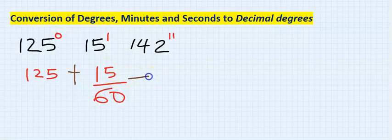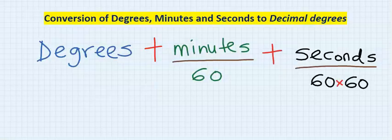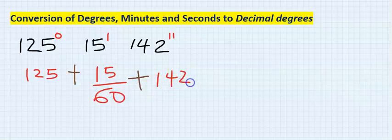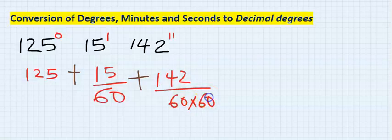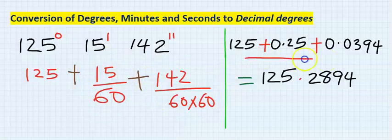Next, plus the seconds, we divide 60 multiply 60. Hence I'm going to have 142 divide 60 by 60, that's 3600. When you solve each of these, adding all these together, you have this as our final result.